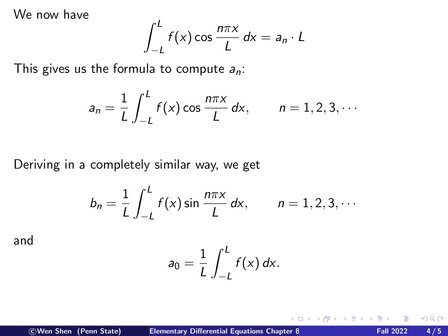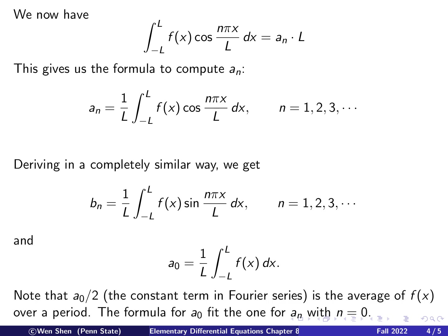And finally, the constant term a0, you can just multiply the equation star with constant 1 and then integrate. And that means taking the sine and cosine functions will be gone and then you quickly get the expression for a0, which is 1 over L integral f(x) times 1, which we can drop from -L to L.